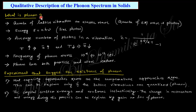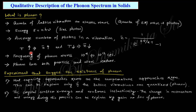The average number of phonons in a vibration mode is given by: n-bar equals 1 divided by (e raised to h-nu over k_B T minus 1), where k_B is Boltzmann's constant and nu is the frequency of the wave — photon or phonon. From this relation, when temperature increases, the denominator decreases, so n-bar increases. Increasing temperature enhances the average number of phonons, and decreasing temperature reduces the number of phonons.